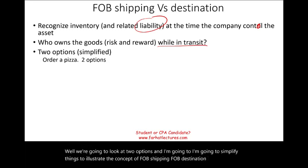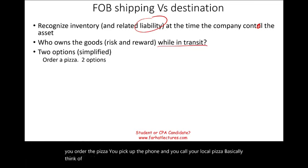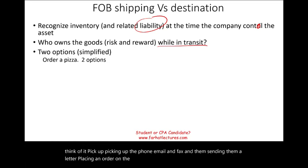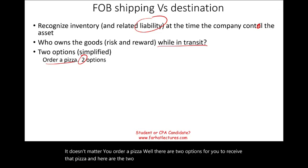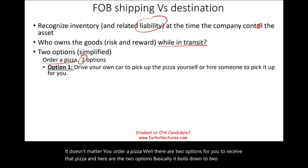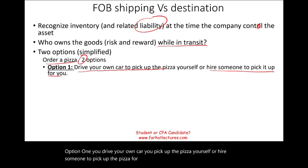Let's assume you order a pizza. You pick up the phone and call your local pizza place — or email, fax, send a letter, place an order on the app, it doesn't matter. You order a pizza. There are two options for you to receive it. Option one: you drive your own car, you pick up the pizza yourself, or you hire someone to pick it up for you. Simply put, you pay for the shipment and you go pick it up yourself.